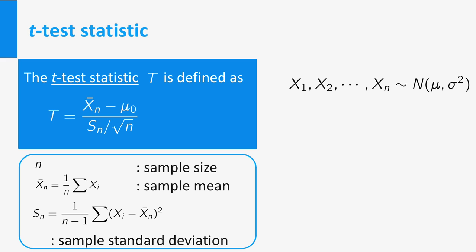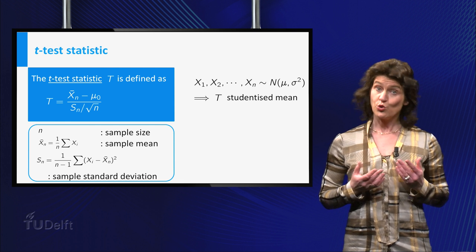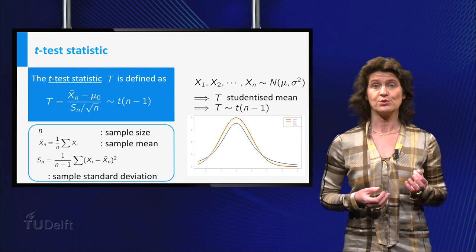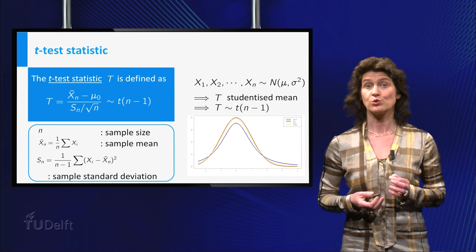Now remember the data were supposed to be representations of normally distributed random variables. This implies that t is in fact a studentized mean introduced to you before. So you know it has a t distribution with n minus 1 degrees of freedom.